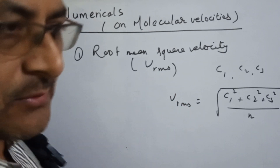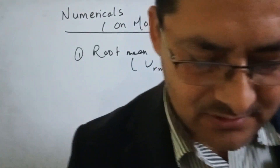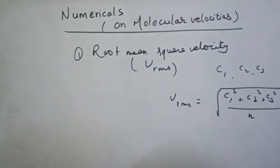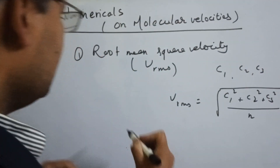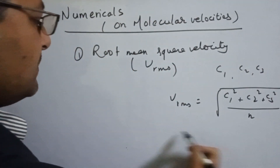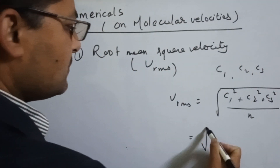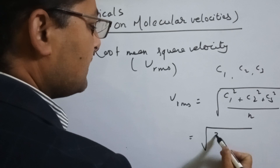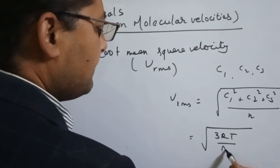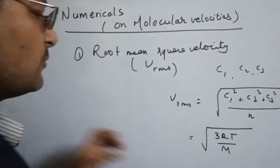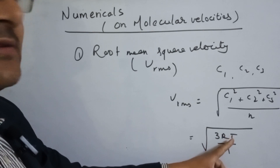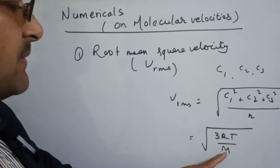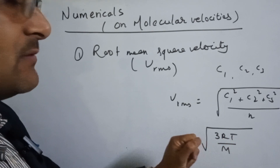We can write and derive this formula as root under 3RT divided by M, where R is the universal gas constant, T is temperature in Kelvin, and M is the molecular mass.